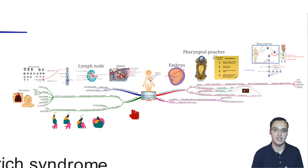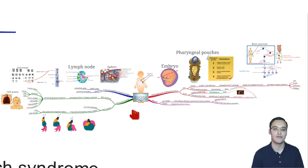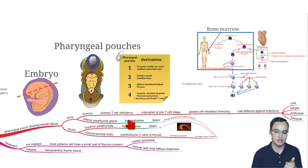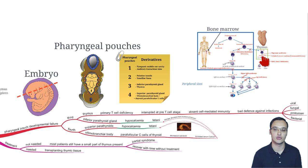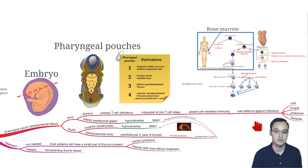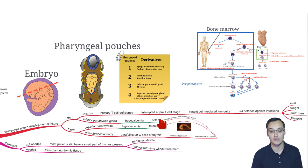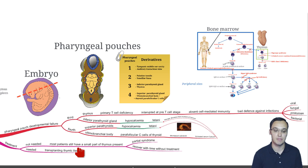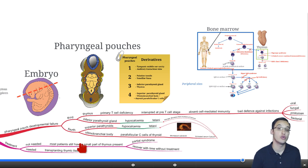Let's summarize. DiGeorge syndrome involves thymic hypoplasia due to pharyngeal pouch developmental failure of the third and fourth pouches. The third pouch gives rise to the thymus, so without it, T cell maturation stops at the pre-T cell stage, giving absent cell-mediated immunity and susceptibility to viral, fungal, protozoan, and bacterial infections. The third pouch also gives rise to the parathyroid, causing hypocalcemia and tetany. Treatment is thymic tissue transplantation, or recovery with time in partial cases.